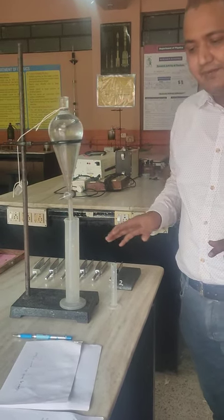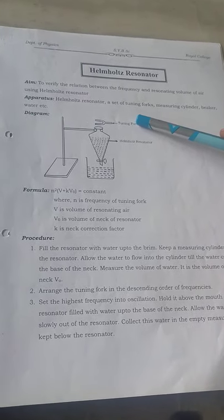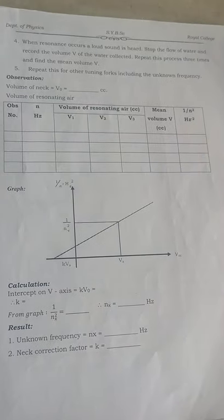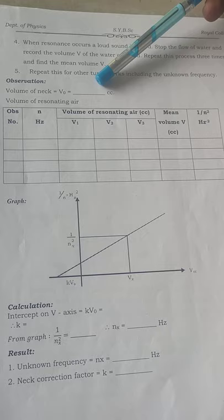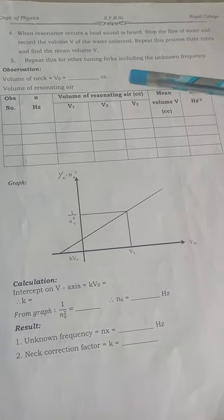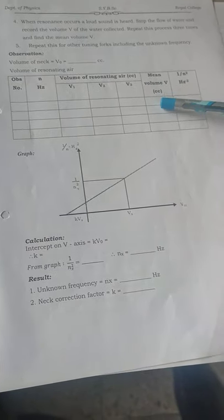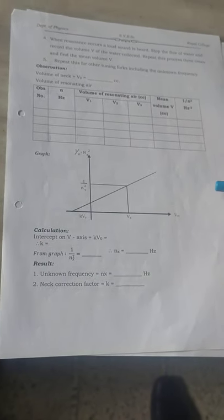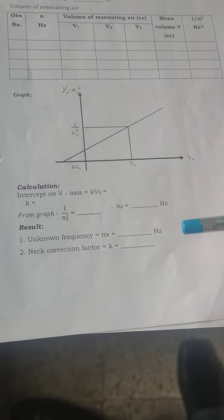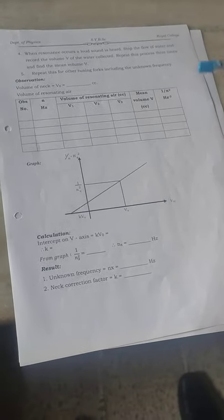We will start the experiment. Here is our setup: this is a resonating tube, here we have a collecting beaker, and this is my tuning fork. We will do some calculation and get the answers. We have to first start with finding the volume of the neck — that is the neck correction — then for different frequencies. I will take different frequencies and find the resonating volume of air. I will repeat the same for the same frequency thrice, find the mean, and hence get the value of 1 upon n squared. After plotting the graph, we will find the value of k, the unknown frequency, and the neck correction.